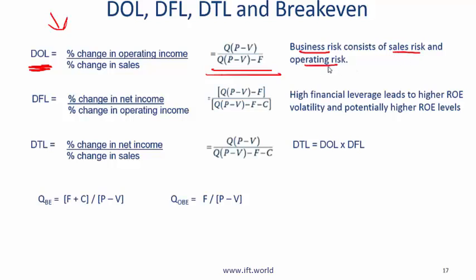Sales risk means the risk of selling less than you expected — either less quantity or at a lower price. Operating risk is the risk of your operating expenses being higher than expected. A company with a high degree of operating leverage will be a company with relatively high fixed costs.